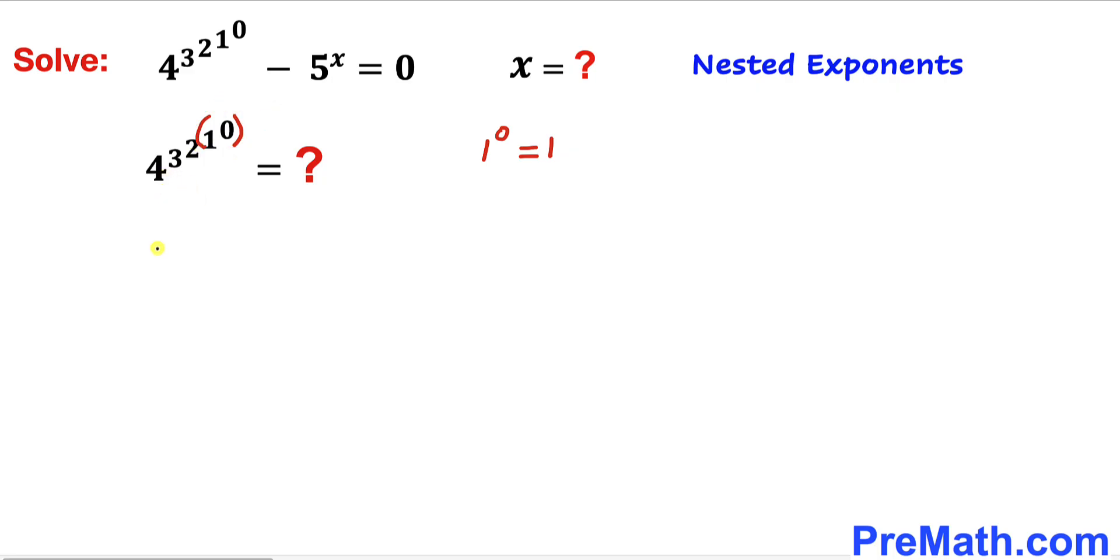So therefore the left hand side is going to become 4^(3^(2^1)). And now let's focus on this part 2^1, and we know 2^1 is same as 2.